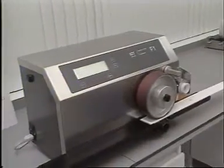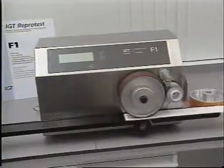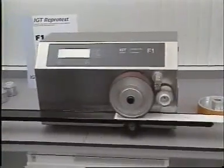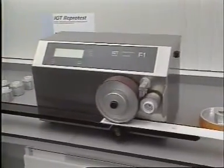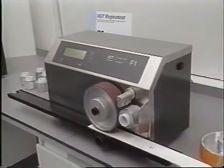The F1 is used to print substrate strips with flexo inks in an ink film thickness which simulates actual practice. The prints are used, among other things, for spectrophotometric or visual appraisal of the colour to determine gloss.